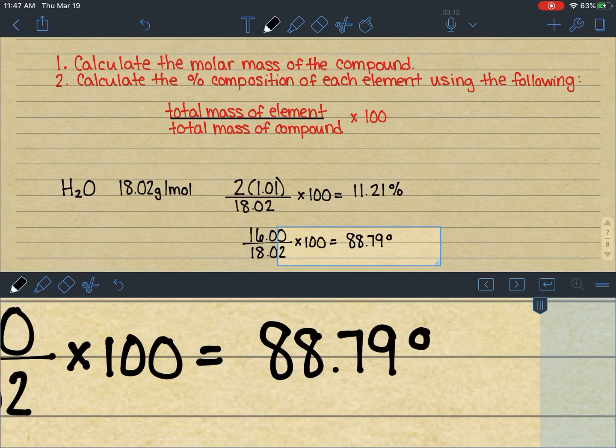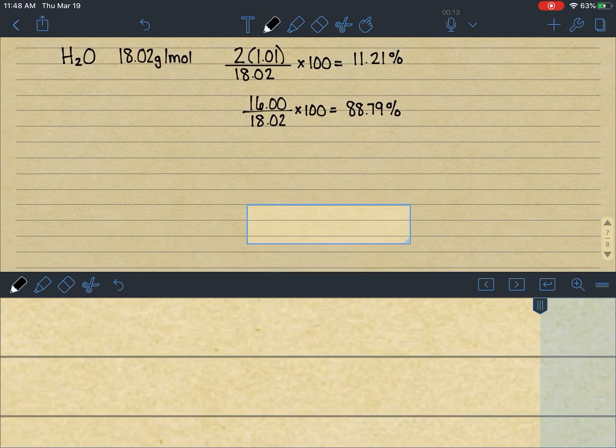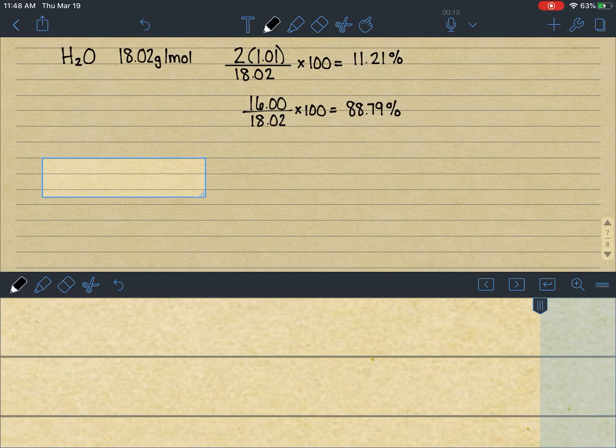Some of you are laughing at me right now because you're like, why did you plug that into your calculator? You should know how to do that math. I'm trying to minimize how many mistakes I make in this virtual learning world that we're in right now. So that's one way we could do it. The other way, I think, is the way that a lot of you did it in your head real quick. Just subtract out 100 minus 11.21%. If there's only two elements in the compound, the total percentages of each element should add up to 100. That's just something good for you guys to keep in mind.